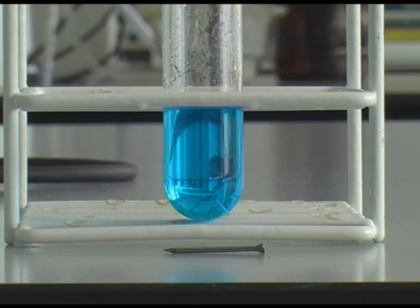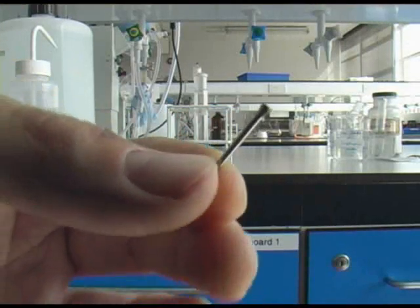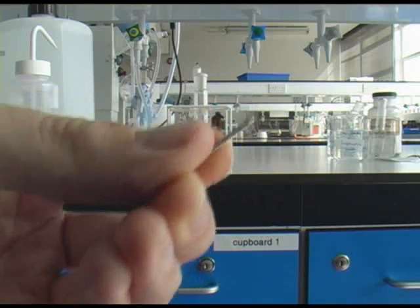Here you can see some copper sulphate solution in the test tube and an iron nail. A close inspection of the nail shows that it is fairly new and there is not a trace of rust on it.